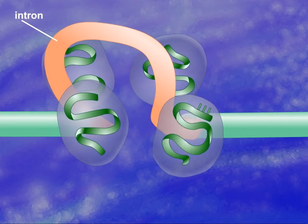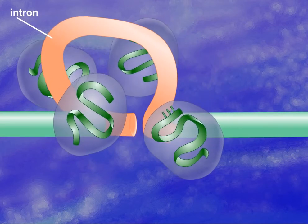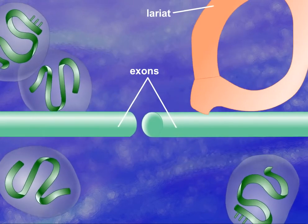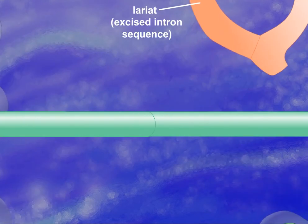Splicing involves cleavage of the 5' end of the intron, forming a looped structure called a lariat, joining the two exons together and releasing the intron.